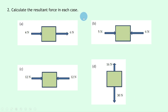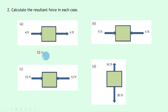Question two also says: calculate the resultant force in each case. For part a we have four newtons to the right on one side and six newtons to the right on the other side, so that's the same as 10 newtons to the right. In part b we have five newtons to the right but six newtons to the left.